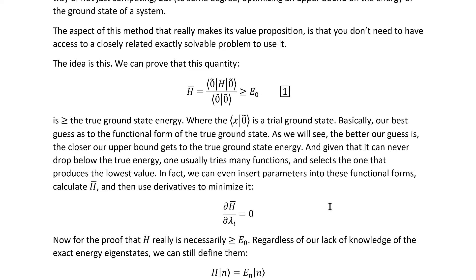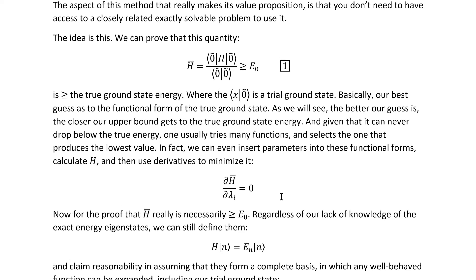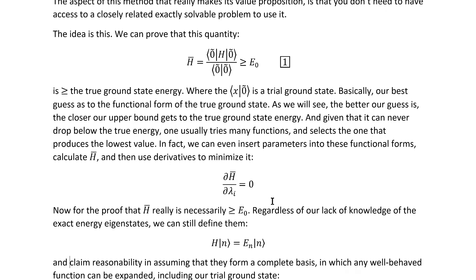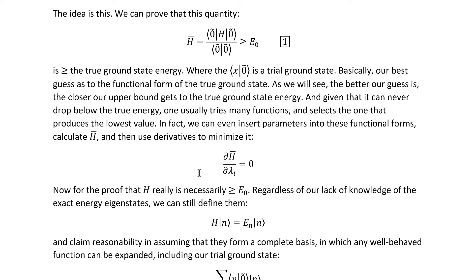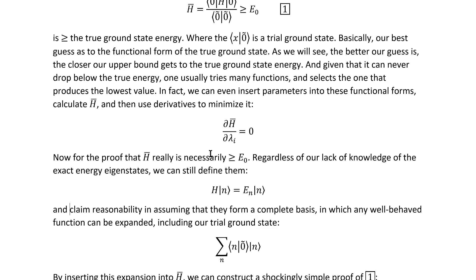To some extent we can even automate this process. If we've got a series of different functions that are related just by the variation of a parameter, then we can calculate this quantity for the general parameter and then just minimize it. In practice we'll often also try many different functional forms that aren't related by those parameters, but this can certainly help speed it up to some extent.